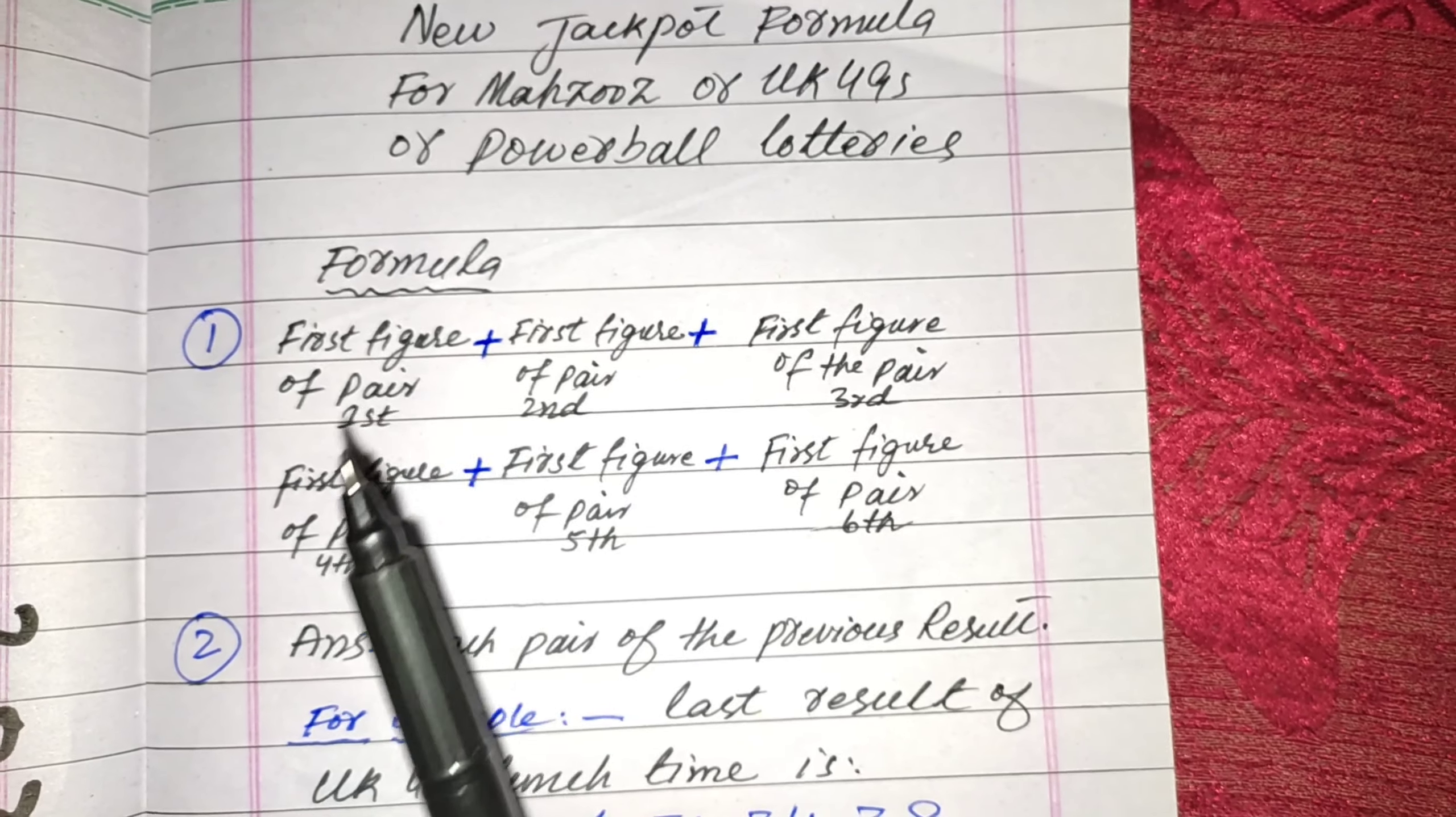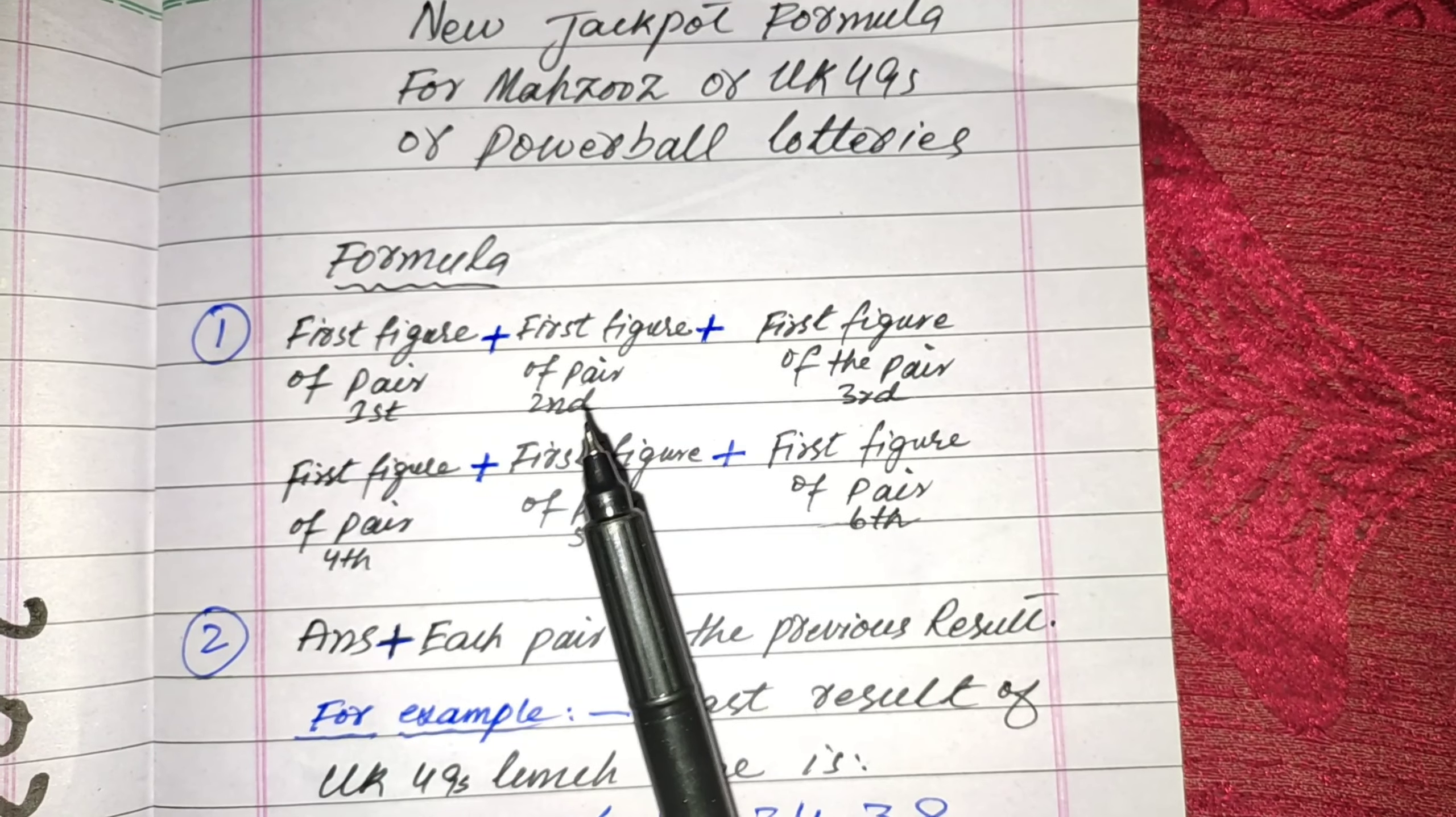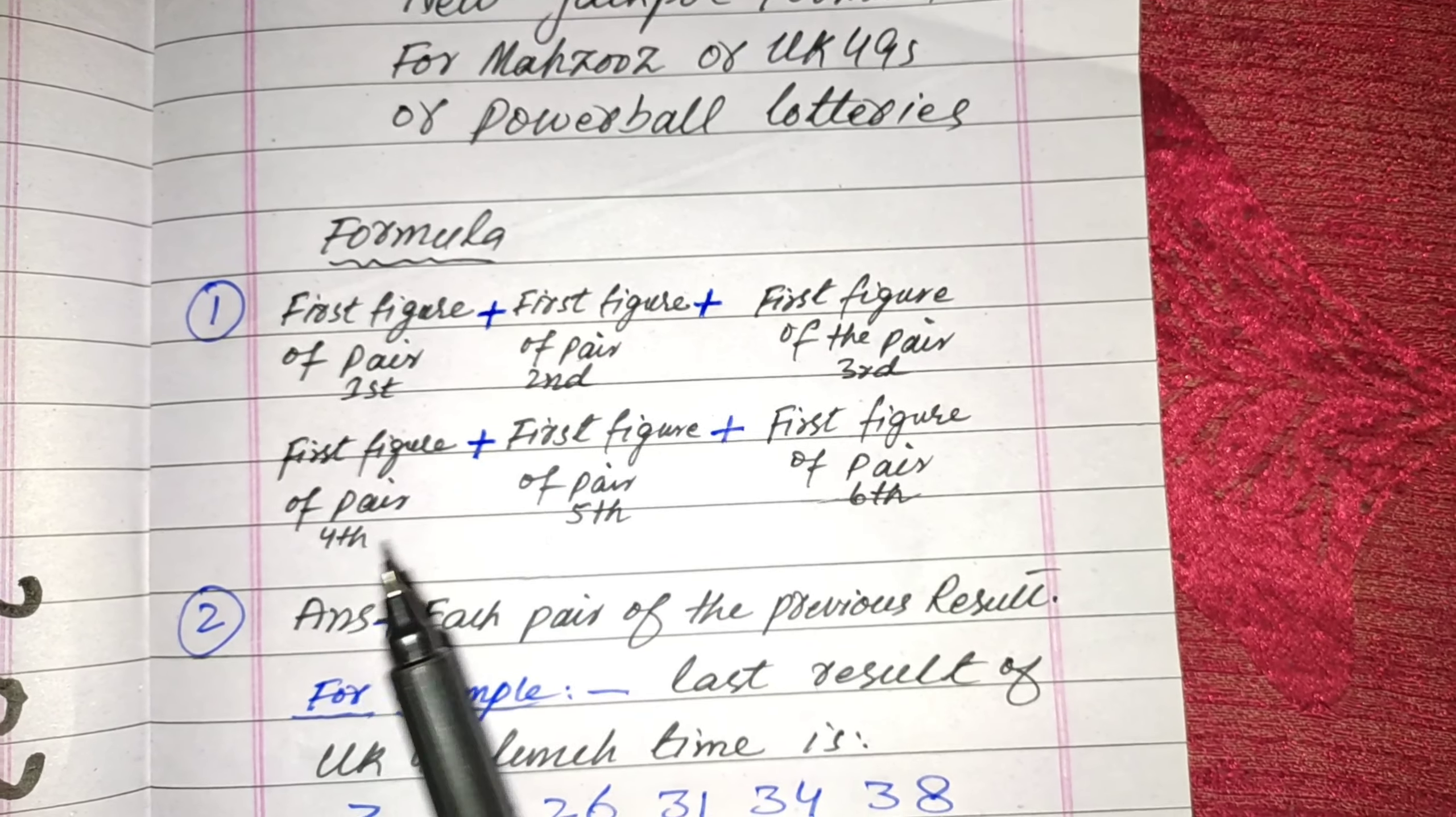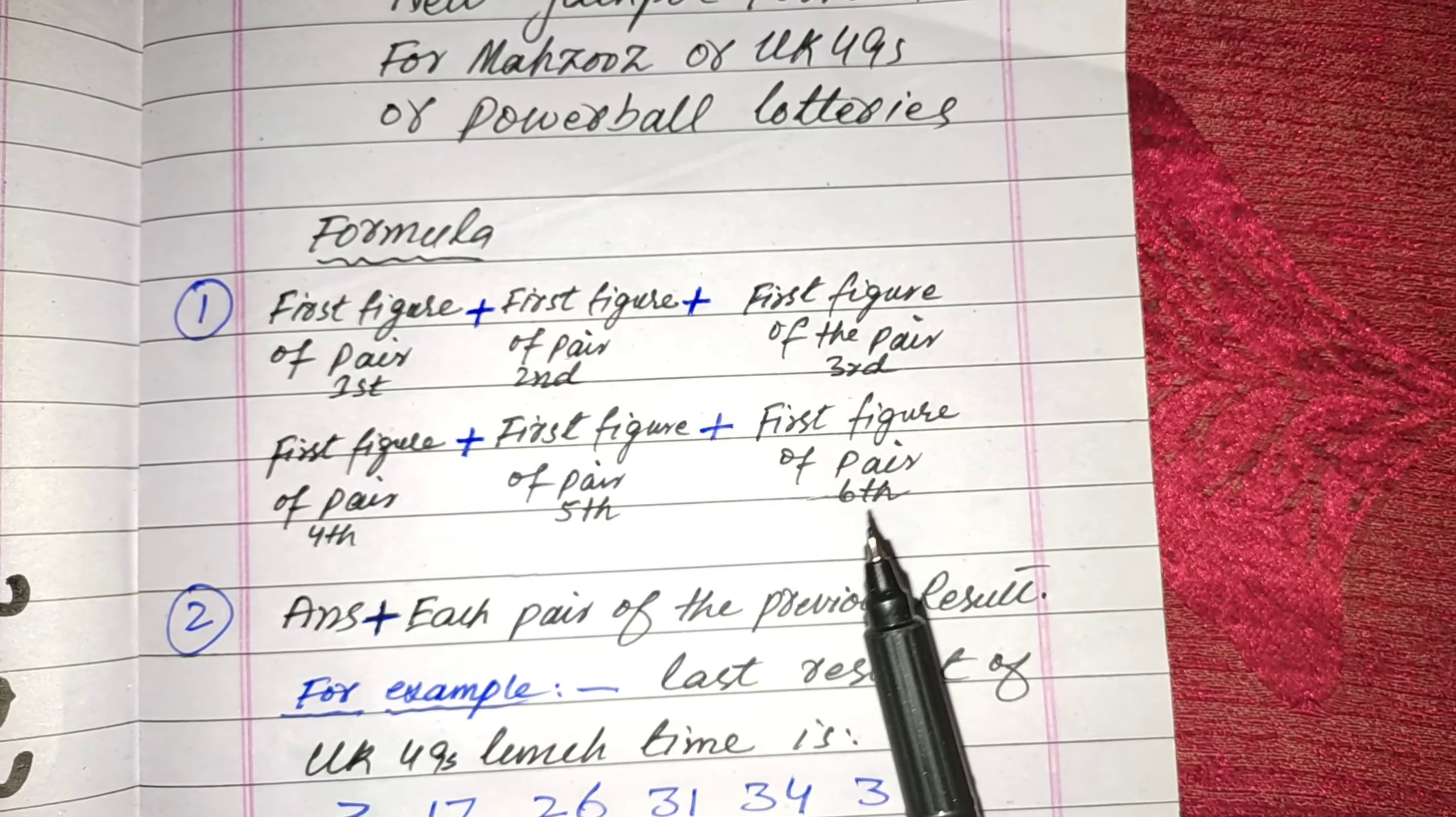Formula: In the first step, you add the first figure of the first pair with the first figure of the second pair, and then the first figure of the third pair, then the first figure of the fourth pair, then the first figure of the fifth, and in last the first figure of the sixth pair.